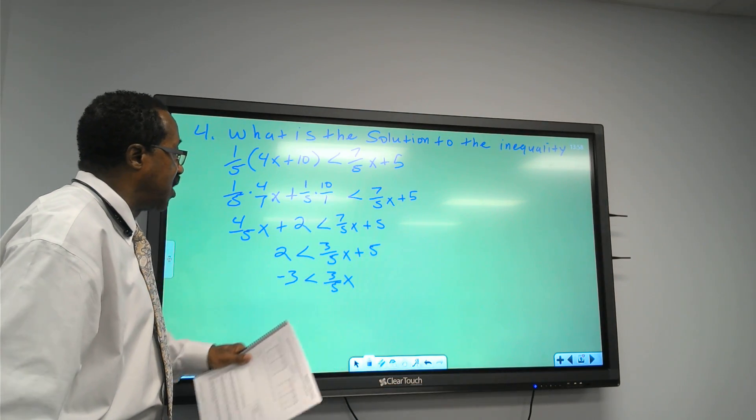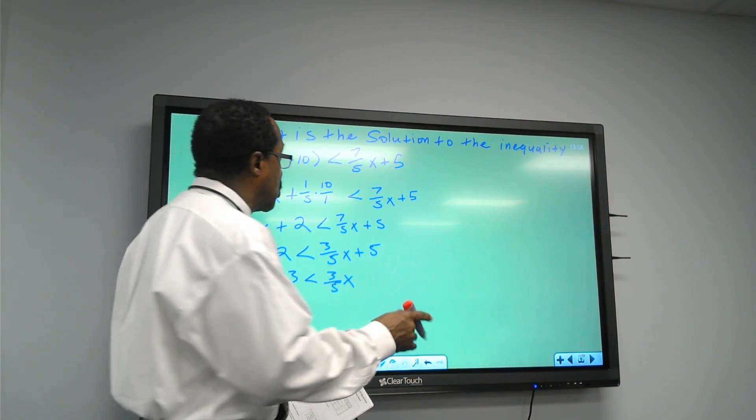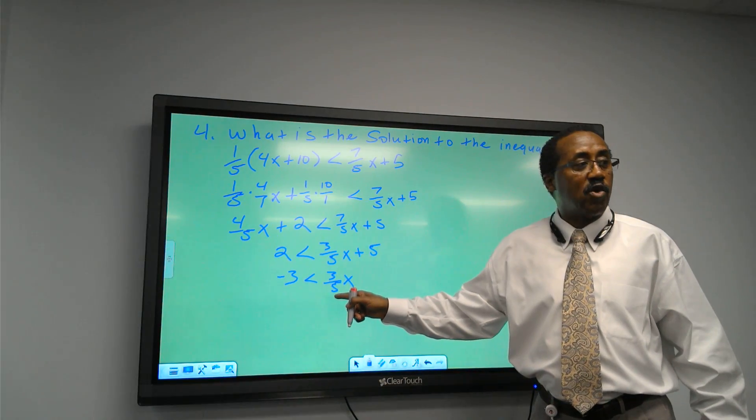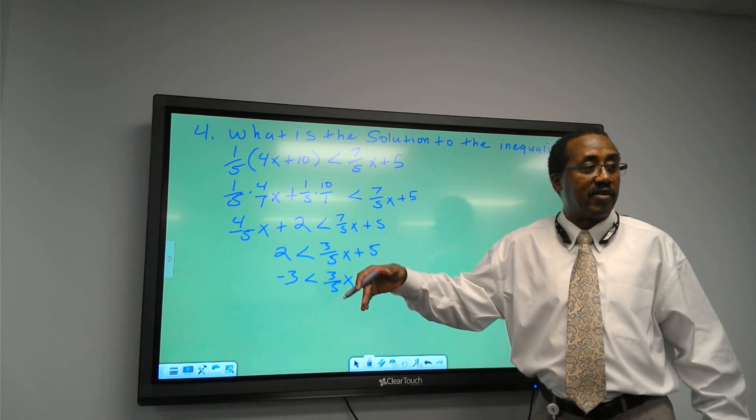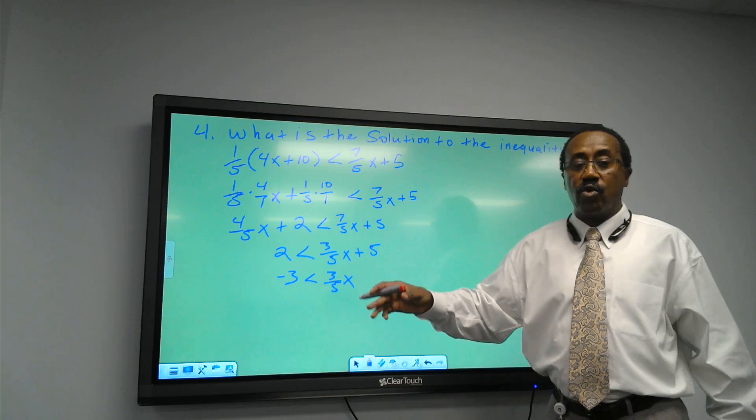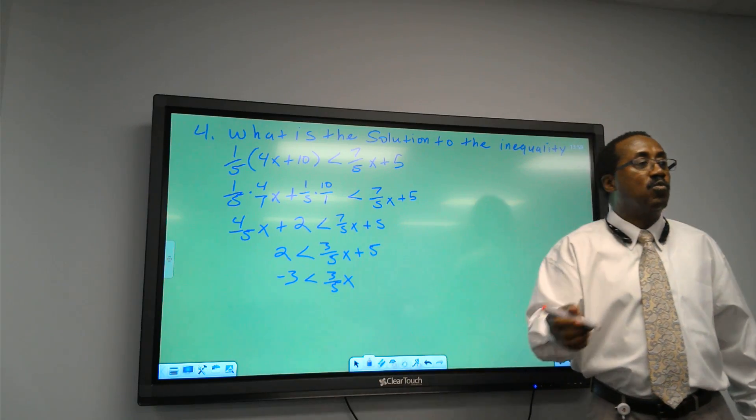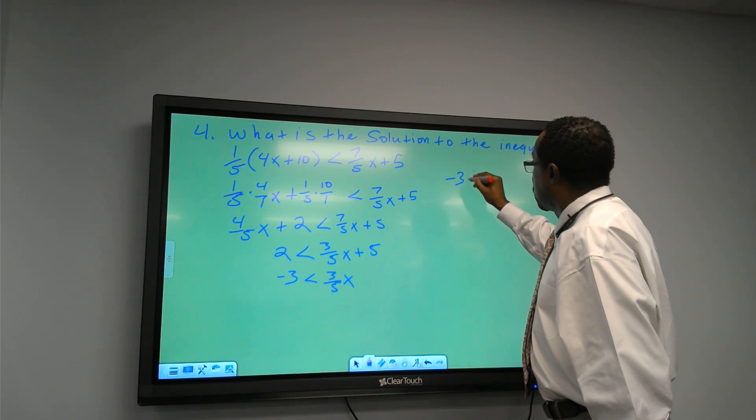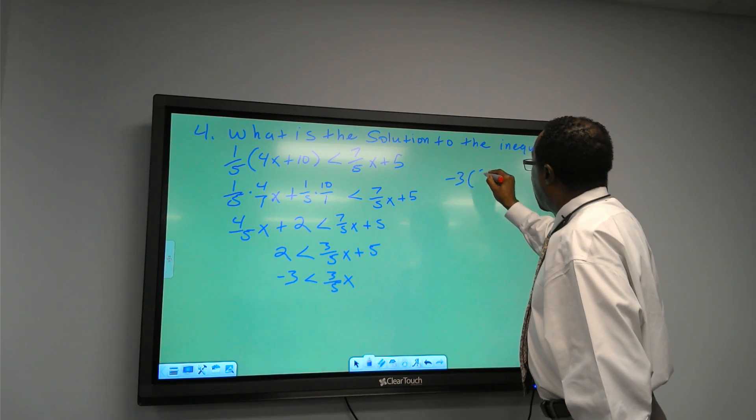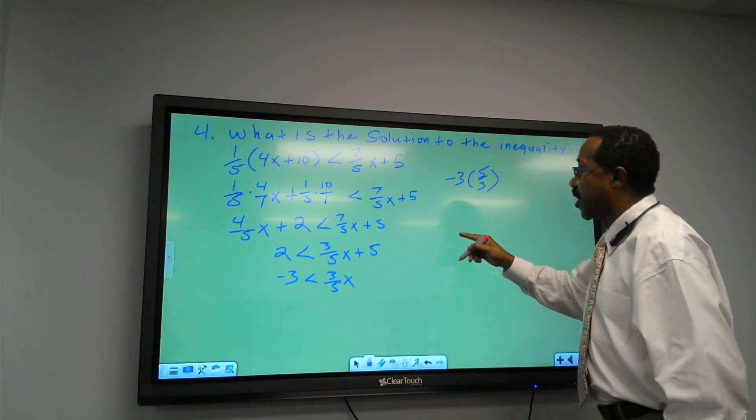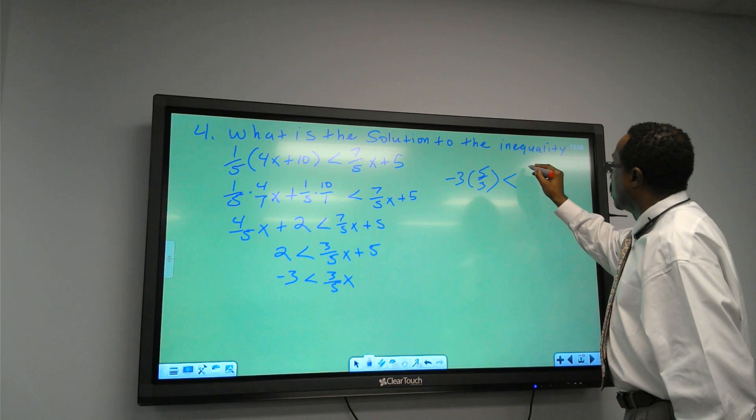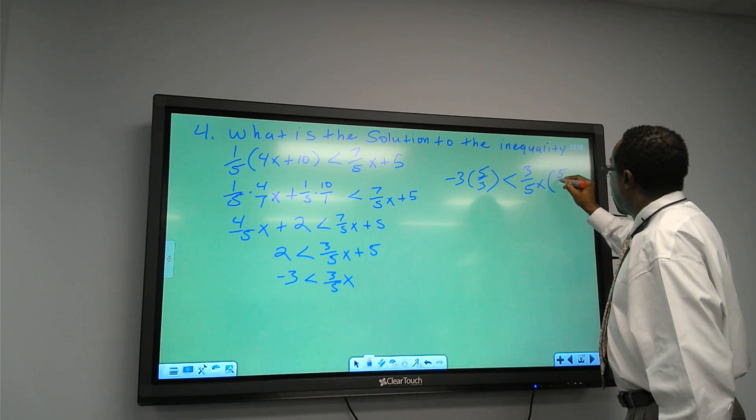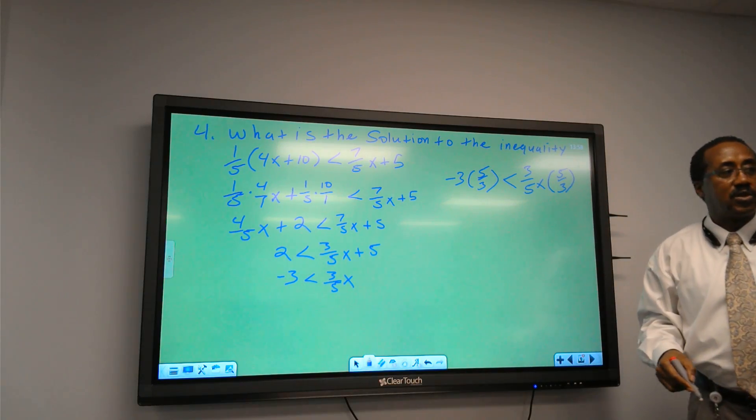I got to solve for x. And the way I do that is, I'm going to go up here so we can make sure that we... I'll take the inverse of 3 over 5, or the reciprocal of 3 over 5, actually, and multiply it by both numbers. When you divide by a fraction, you multiply by the reciprocal. So here, I will take a negative 3 times 5 over 3. It's less than, then I will take 3 over 5x and multiply that times 5 over 3.